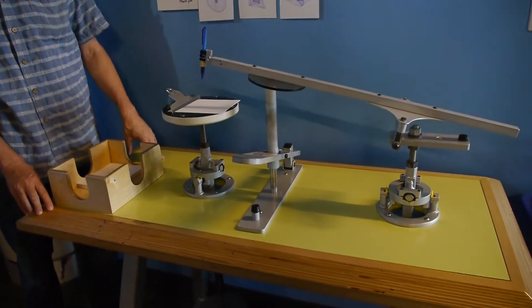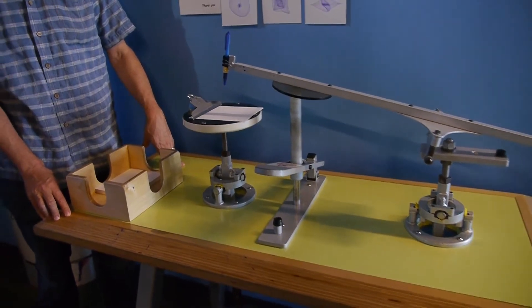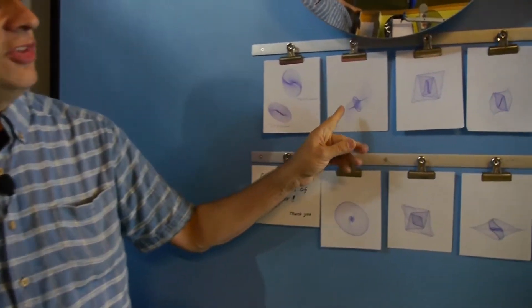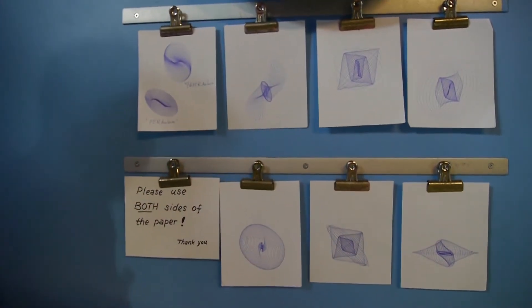Now the harmonograph allows you to create pictures. These are known as Lissajous patterns. They're created by two different pendulums moving back and forth in different patterns. Based on how they move you can get these beautiful patterns like you see coming up here.